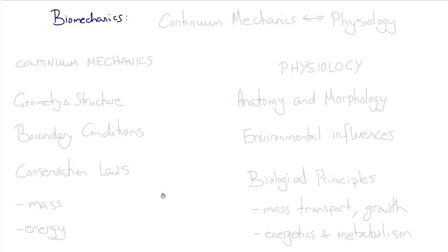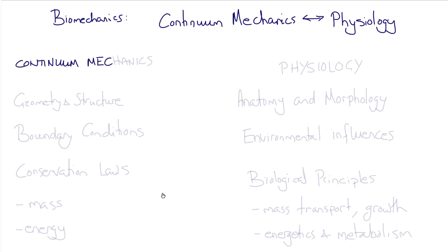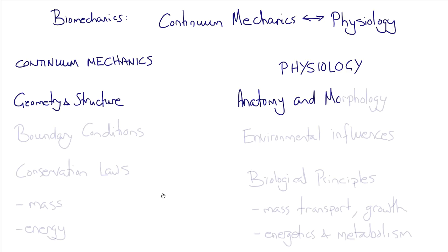Let's look at biomechanics, particularly at the interface between continuum mechanics and physiology. On the left, consider the components of the continuum mechanics problem; on the right, look at the analog in physiology. In continuum mechanics we have geometry and structure — well, in physiology, the first thing you learn about a physiological system is its anatomy and morphology. You can't understand how an organ or tissue works until you know about its structure.